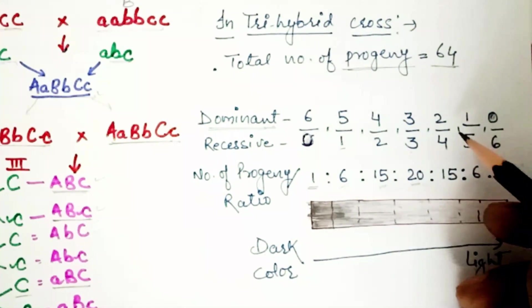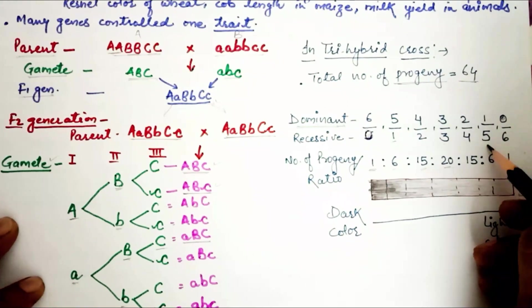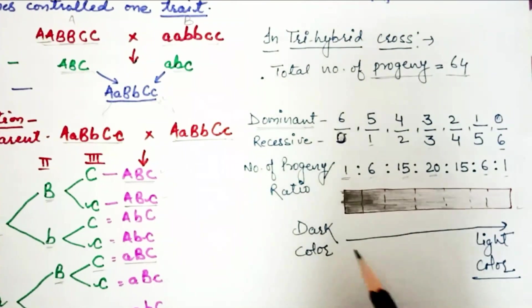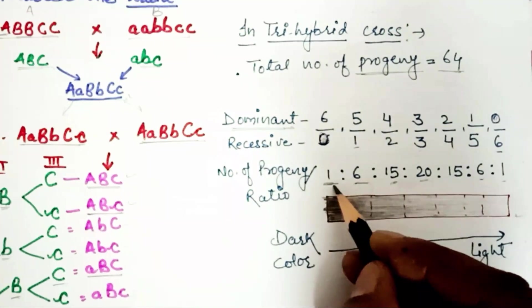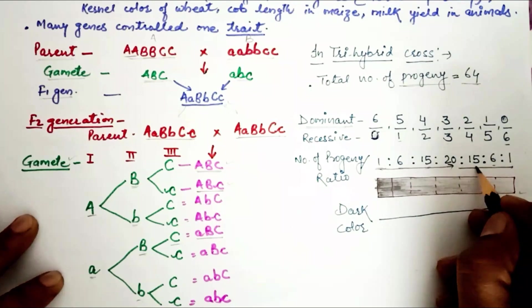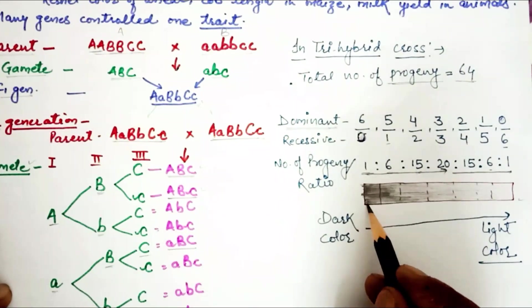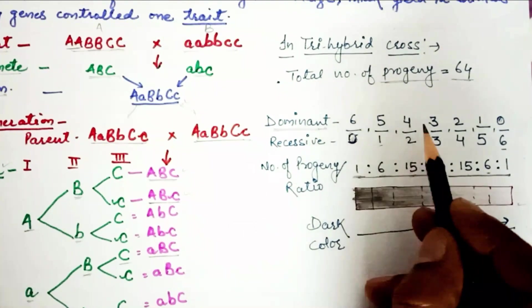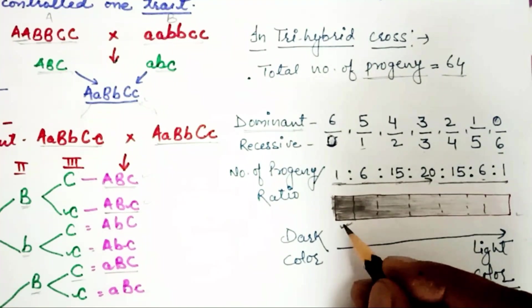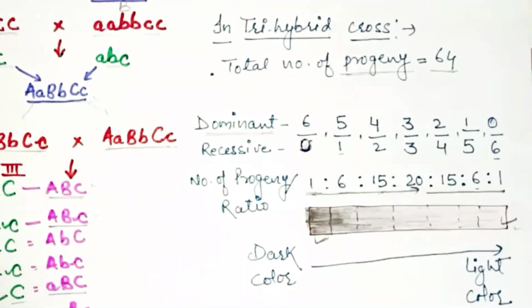This number of progeny is 15. And 3 alleles dominant and 3 recessive, this is 20. 2 dominant, 4 recessive is 15. 1 dominant, 5 recessive is 6 progeny. 0 dominant, all 6 progeny are recessive. So this ratio will be 1:6:15:20:15:6:1. Dominant alleles determine darker skin color, and fewer dominant alleles result in fairer skin color.